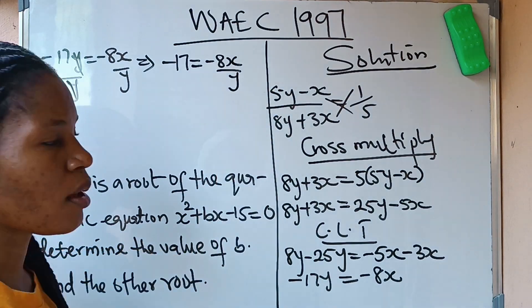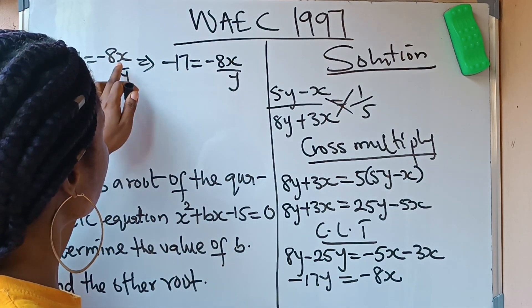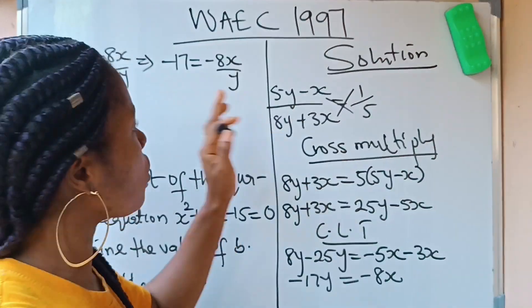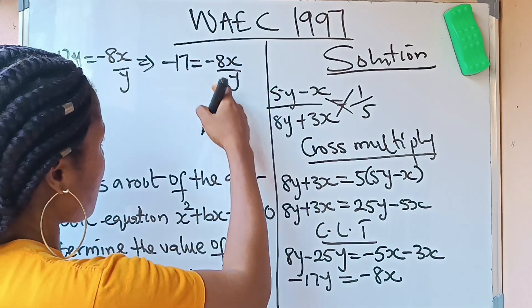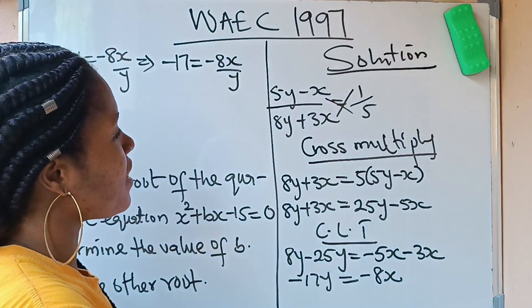But what we are looking for is x/y, not -8x/y. So that means we need to remove this -8 so that only x/y will remain.